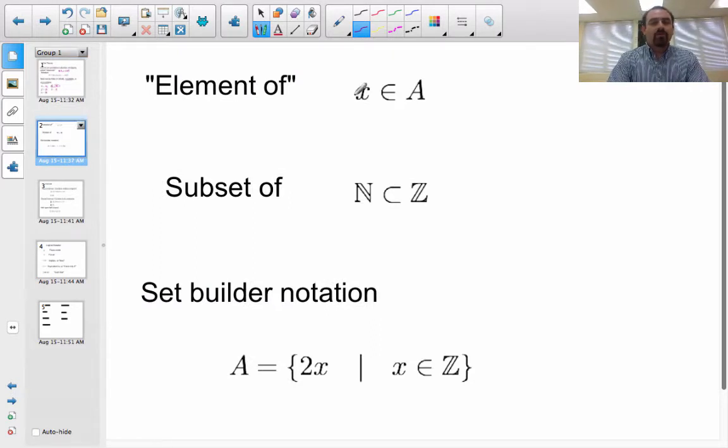More important set theory concepts. Element of. I read this as X is an element of A. X is an element of A. So this little E here, kind of like a lowercase sigma, is going to be element of. And that just means that the number one-half is an element of the rational numbers. This is in this set.